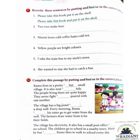Number 3: 'Munni loves cold coffee ___ hates cold tea.' The answer is: 'Munni loves cold coffee but hates cold tea.' Number 4: 'Yellow ___ purple are bright colors.' The answer is: 'Yellow and purple are bright colors.' Number 5: 'I take the train ___ bus to my uncle's town.' The answer is: 'I take the train or bus to my uncle's town.'